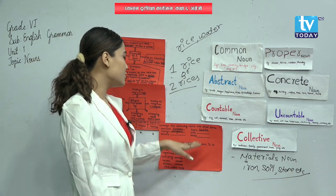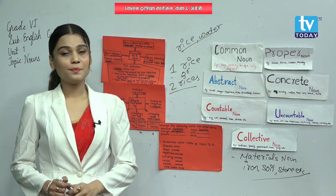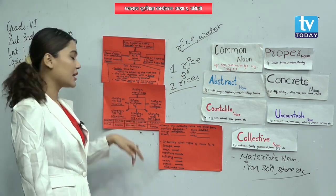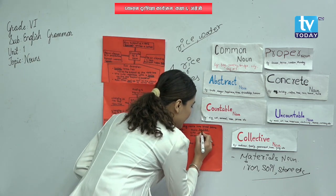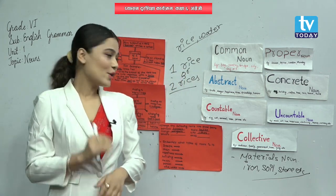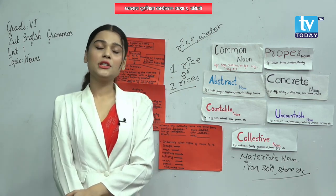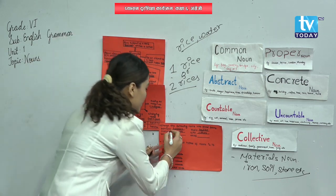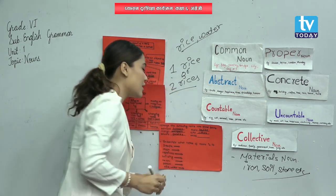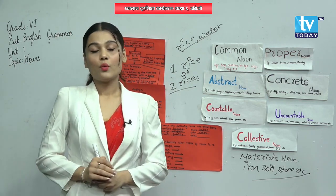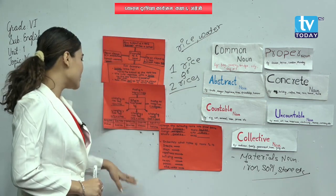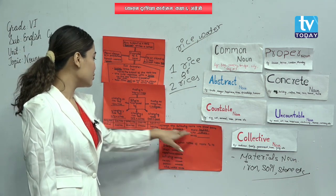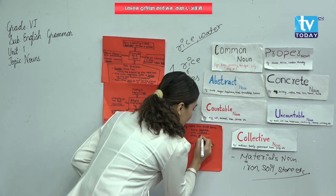Next one and the last one is thief — t-h-i-e-f. What we need to add here? We need to add 'ves.' Look here — changing 'f' into 'ves.' That means t-h-i-e-f, we change 'f' into 'ves,' so it becomes t-h-i-e-v-e-s, thieves. Are you clear, my dear students?